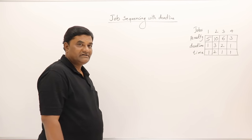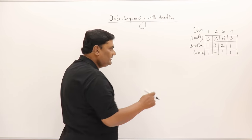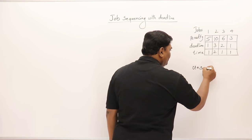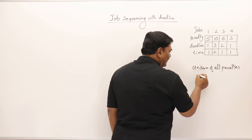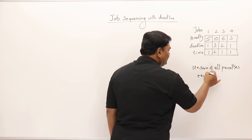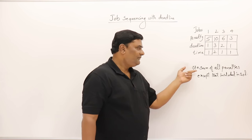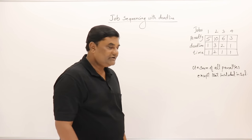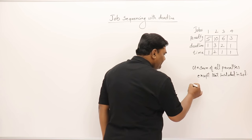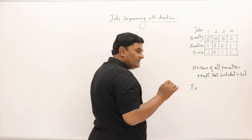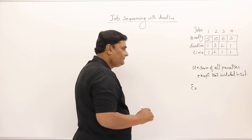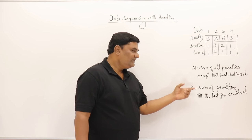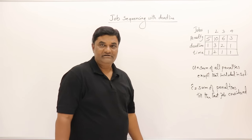The upper bound for each node is the sum of all the penalties except those jobs which are included in the solution. The cost is the sum of all the penalties up to the last job that we have considered.